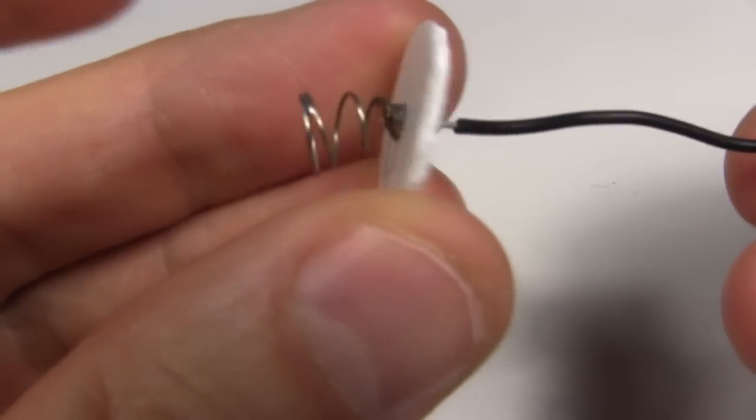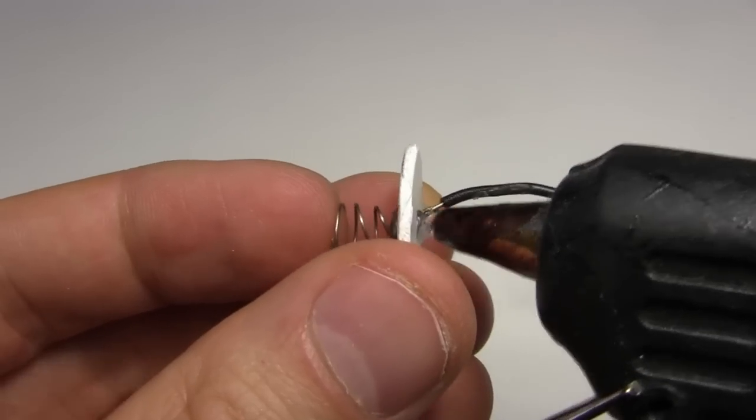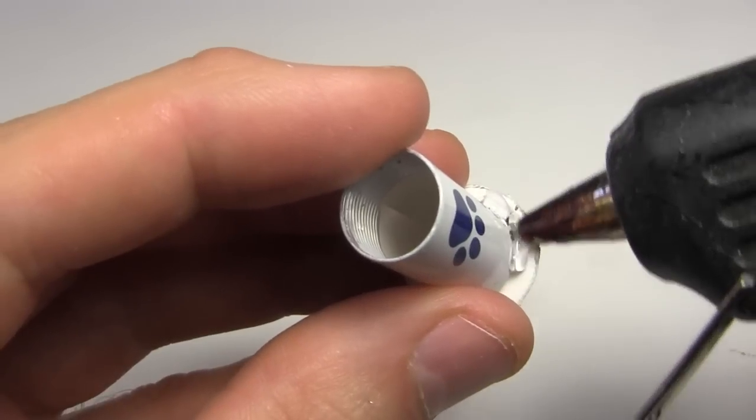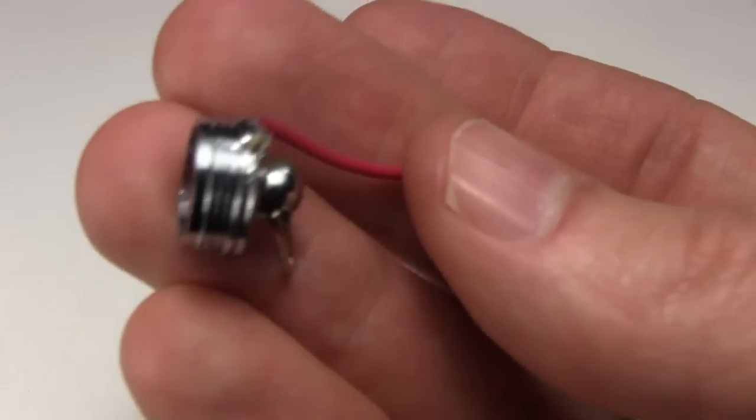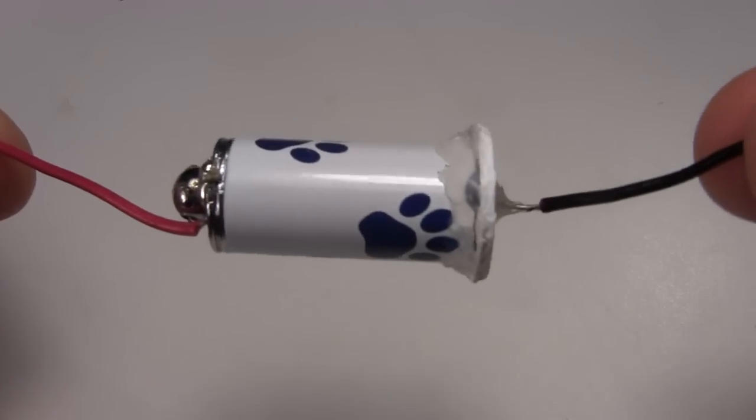Then I make a disc out of scrap plastic with a hole in the middle, and put the wire and spring through that. And then hot glue that to the end of the cylinder. I solder another wire to the cap. And here's the finished battery holder.